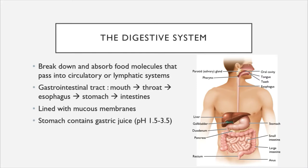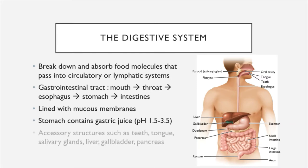The digestive system also contains accessory structures, which we will consider in this chapter as well, including your teeth, your tongue, your salivary glands, your liver, your gallbladder, and pancreas.